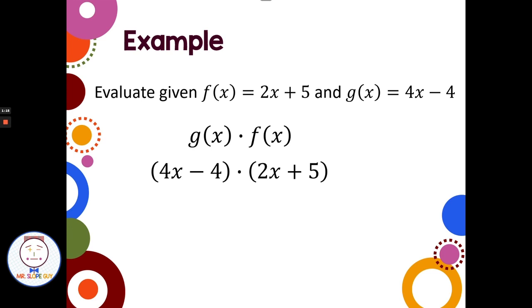Well, first we have 4x and 2x, so 4x times 2x is 8x squared. Then we're going to do the outside, 4x times 5 is 20x. Inside, negative 4 times 2x is negative 8x. And last, we have negative 4 times 5 is negative 20.